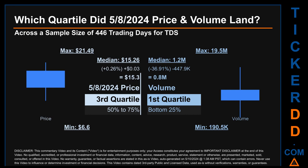Hello, my name is Maria. Which quartile did the May 8th, 2024 price and volume land in across a sample of 446 trading days? The maximum end-of-day price for TDS was $21.49 while the minimum was $6.60. The May 8th price of $15.30 landed within the third quartile, placing it in the 50 to 75 percentile range. The day's volume landed in the first quartile — the bottom 25% — out of a max daily volume of 19.5 million and a minimum of 190,500. TDS has a median price of $15.26, so the May 8th price was higher by $0.26, while volume of 0.8 million was 36.91% below the median.